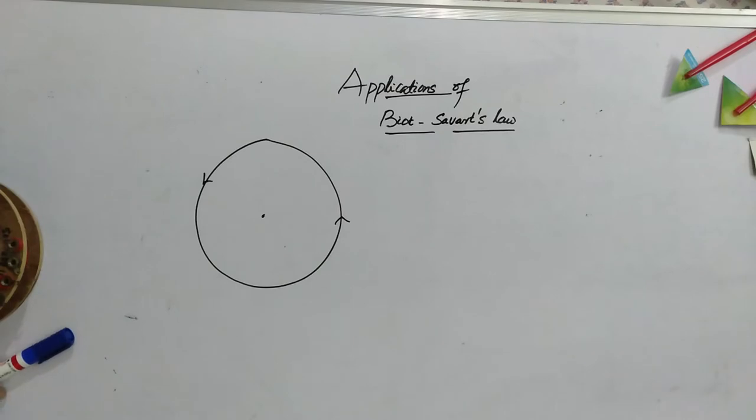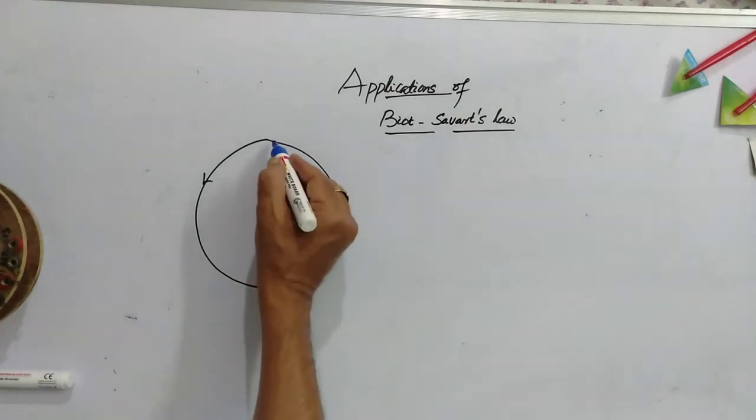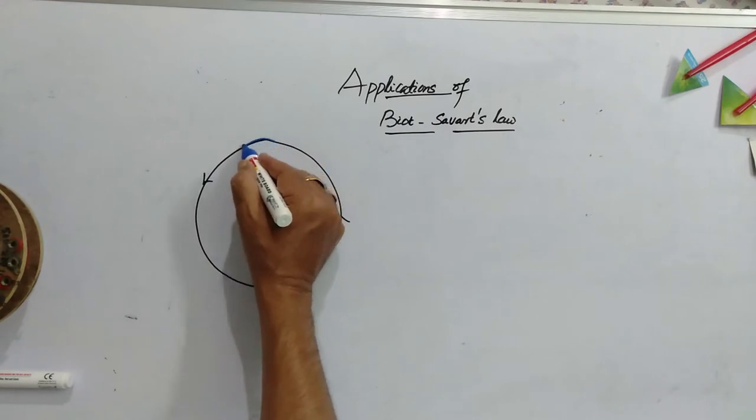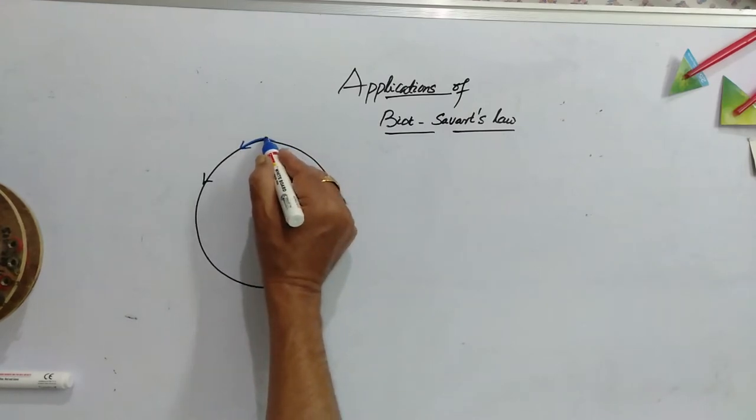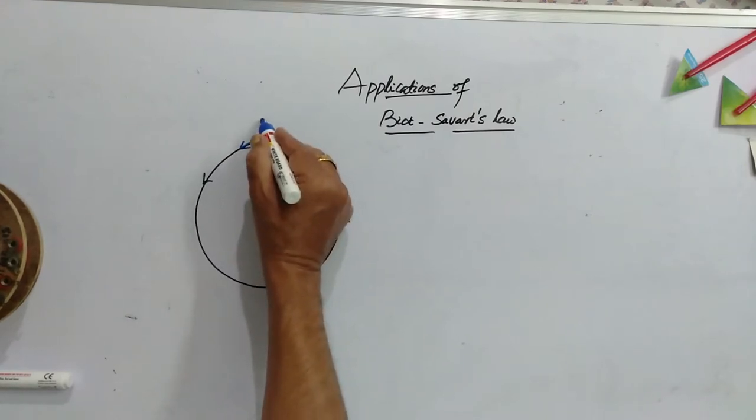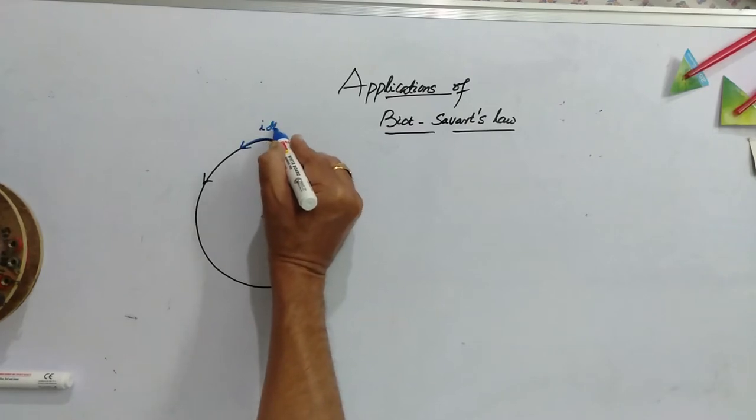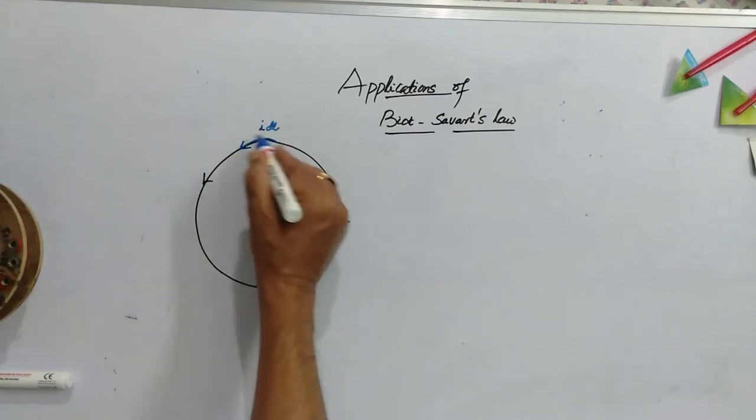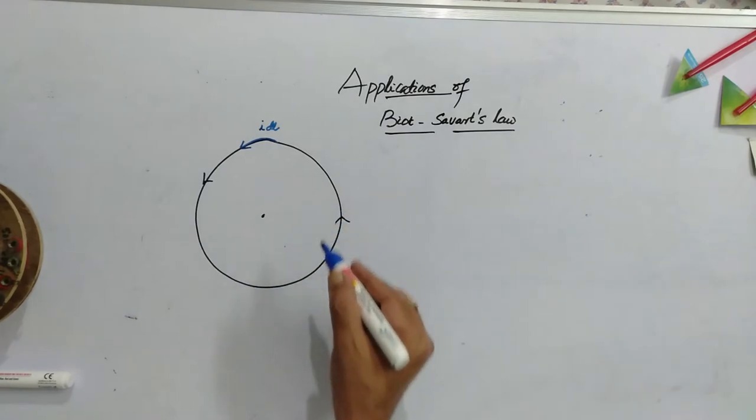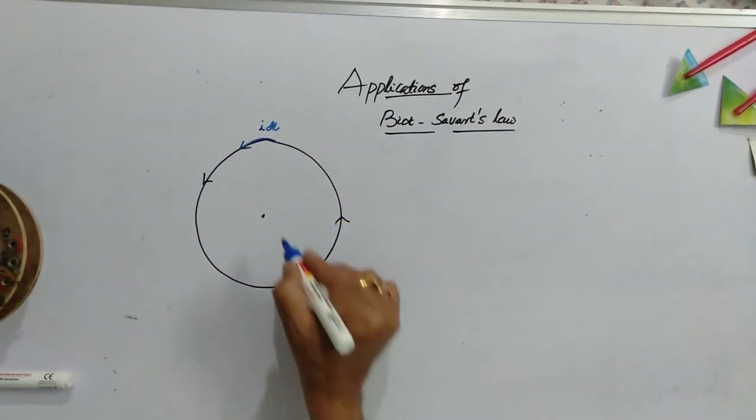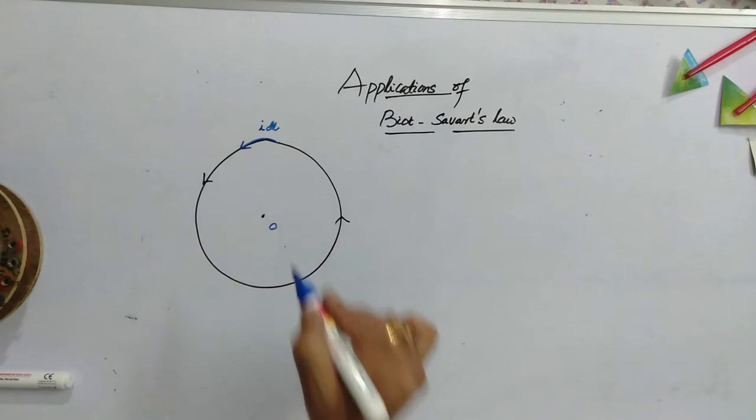To do this, we will have to take the small current element. Let it be I DL, DL is the length of this element and I is the current. I DL is called current element and this is the center O.